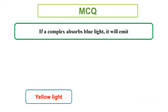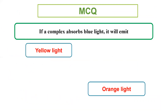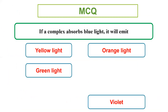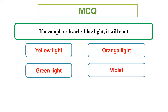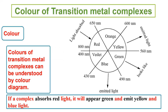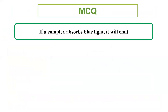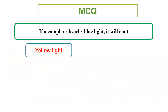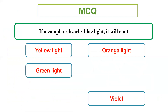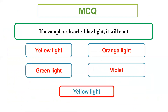If a complex absorbs blue light, it emits the remaining colors: yellow, orange, green, and violet. The complementary colors of blue give an orange-red appearance. So if blue light is absorbed, the substance will appear orange-red colored.